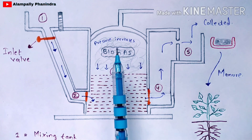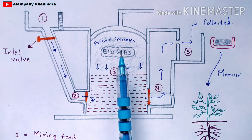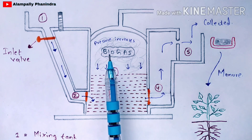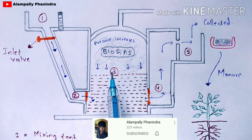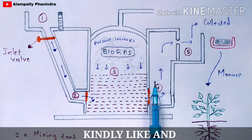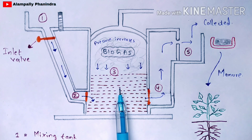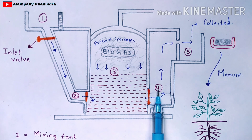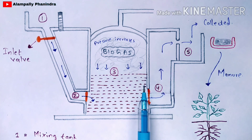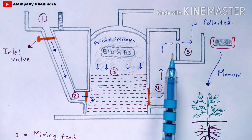Once the gas fills the tank, pressure gradually increases. This pressure is from the biogas — the methane gas produced by the methanobacterium. When the pressure increases sufficiently, open the outlet chamber valve so that the slurry present inside the digester tank moves into the outlet chamber.